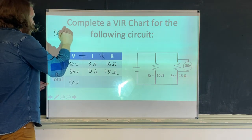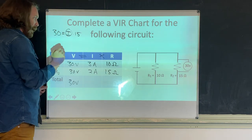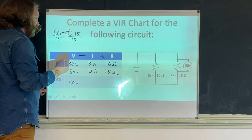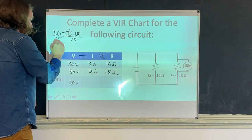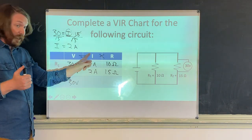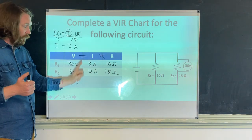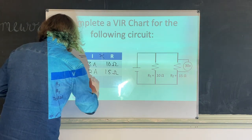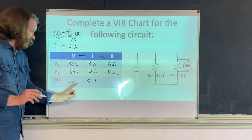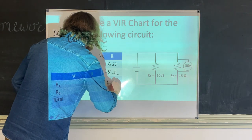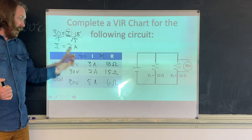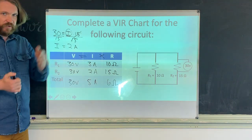For R2: 30 = I × 15. Dividing both sides by 15 gives I = 2 amps. Total current: 3 + 2 = 5 amps. Then blank × 5 = 30, so R_total = 30/5 = 6 ohms. That completes the entire VIR chart.